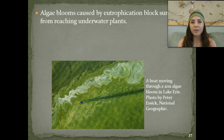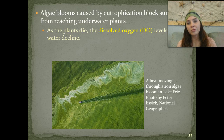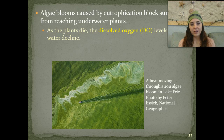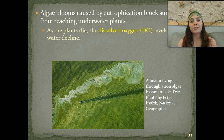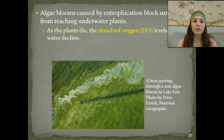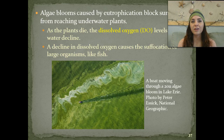Algae blooms caused by eutrophication block sunlight from reaching other underwater plants, so those plants will die. The death of underwater plants, as well as all of the blooming algae, decreases the dissolved oxygen content of the water. When dissolved oxygen is lowered, larger animals such as fish are going to die because they can't get enough oxygen—they actually suffocate to death.